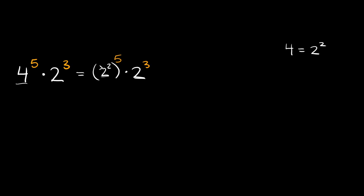Let's simplify this thing right here. We have two squared raised to the fifth power. How do you simplify a power raised to another power? Well you just multiply those together. So really we're going to have two raised to the tenth power, because two times five is equal to ten. So we have two raised to the tenth power, and we're still multiplying times two raised to the third power.